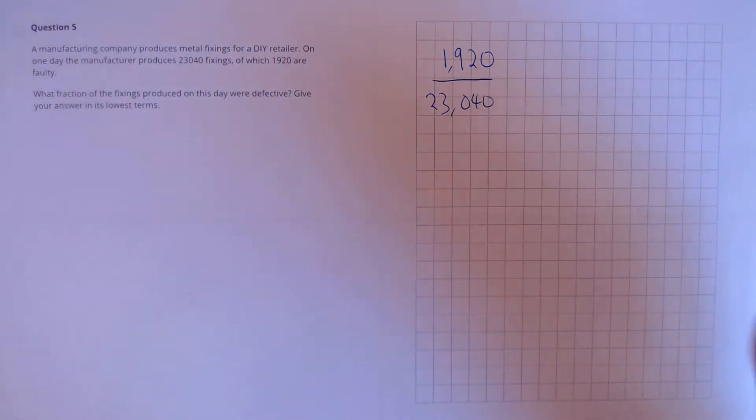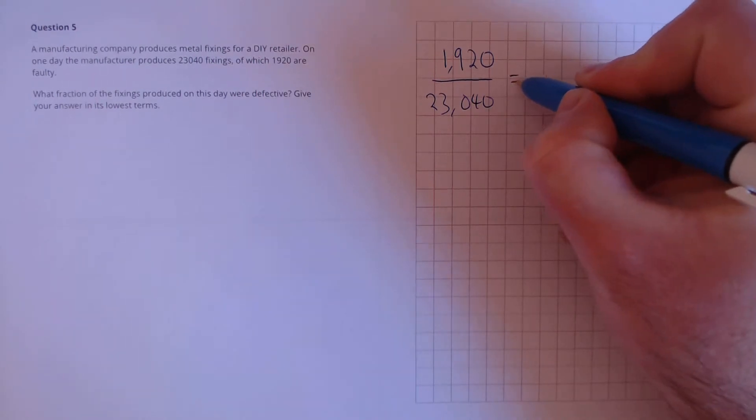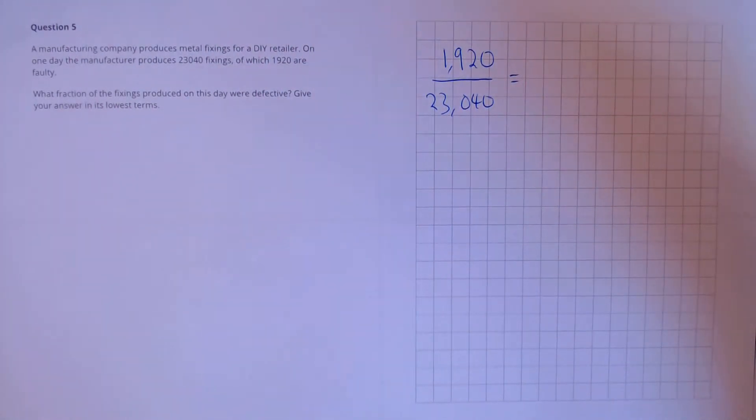We need to give this answer in its lowest terms, so we need to start dividing both parts of the fraction by the same number to cancel it down.